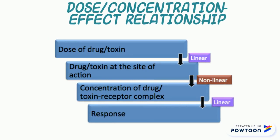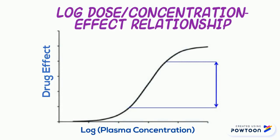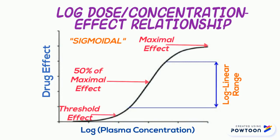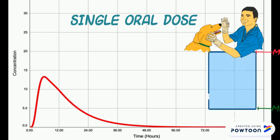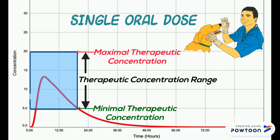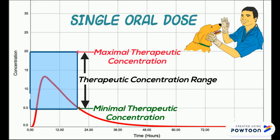Most drug actions require that therapeutic concentrations of a drug are reached at the target site for a certain period of time, and those concentrations at the target site are going to be in a steady state with the plasma drug concentrations. Looking at the time versus concentration curve for a single oral dose, if we know the therapeutic concentration range in plasma, all we need to do is maintain those concentrations within that range for the necessary time to achieve the desired effect.